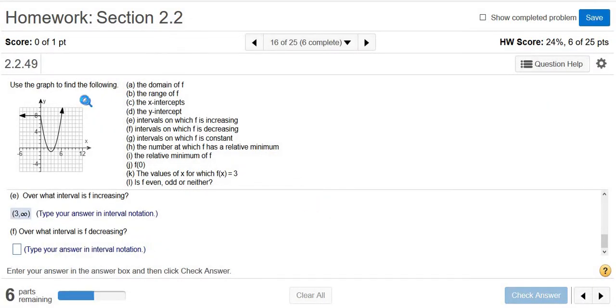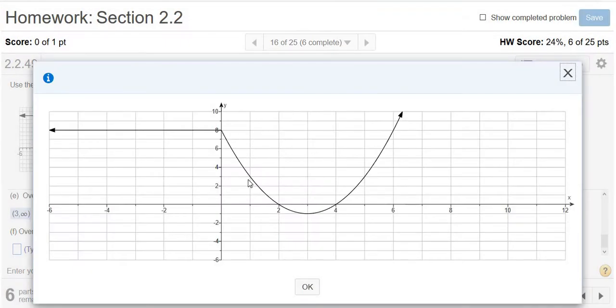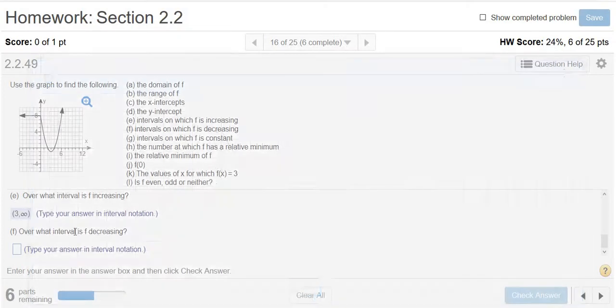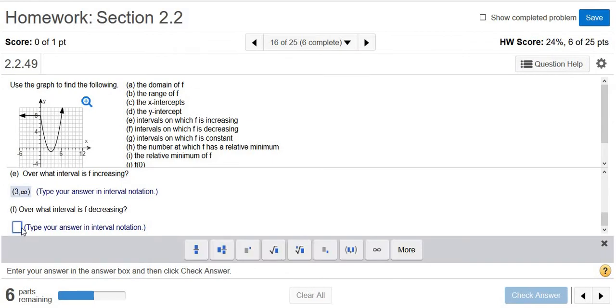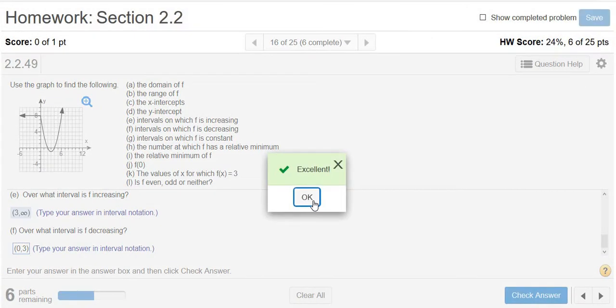The next one wants to know where it's decreasing. Going back to our graph, we can see it's getting smaller here. The y-values are going down. That happens from 0 to 3. So from 0 to 3, the y-values get smaller. Always parentheses for increasing and decreasing. 0 to 3, y-values get smaller.